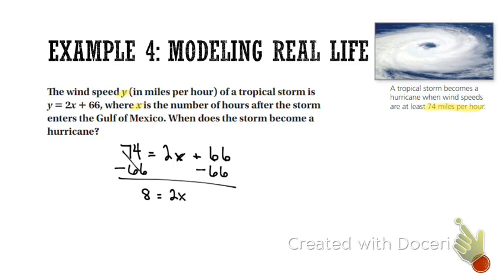And 8 equals 2x. All right, so you see what I'm doing here? I'm just trying to solve for x. Now I divide both sides by 2. And x equals, remember what x stood for. What did x stand for? x is the number of hours. So x equals 4 hours. That's how long it took this storm to become a hurricane.